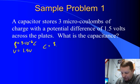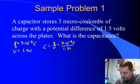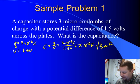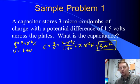Well, capacitance is charge over voltage, or 3 times 10 to the minus 6 coulombs over 1.5 volts gives us 2 times 10 to the minus 6 farads, or 2 microfarads. Really straightforward.